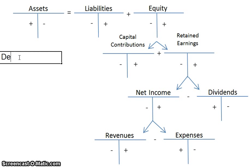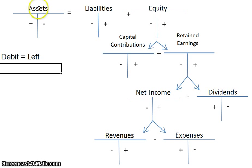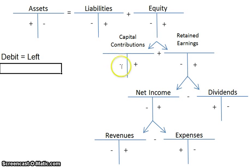A debit simply means that you've recorded something on the left-hand side. For example, if we're talking about an asset and a debit on an asset, that means you recorded a left-handed entry on the asset account. You'll learn that that left-handed entry means it increases the asset. Now, if you recorded a left-handed entry to capital contributions, that means you have fewer capital contributions — you've reduced them.